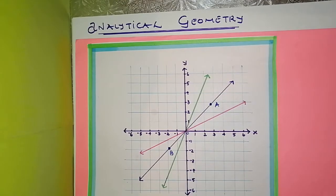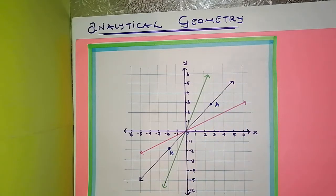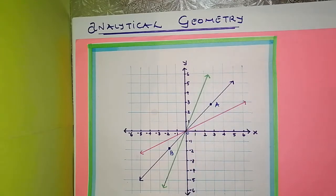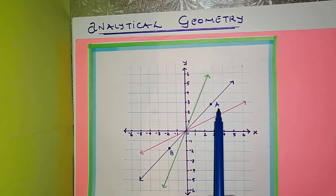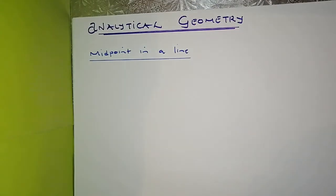But what happens when we've got lines that are more complex? You can't just guess — saying 'I think it's one and one' is not going to work. So I'm going to teach you how to find a midpoint in a particular line given the coordinates of two points, maybe coordinates of A and coordinates of B.